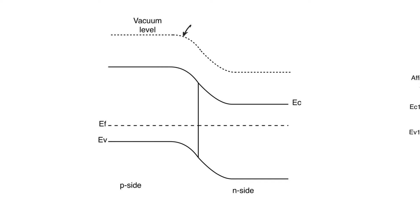Secondly, we notice that left of the interface we have an electron affinity, which is the electron affinity of silicon, and right of the interface we also have the electron affinity of silicon, because we have silicon on both sides. We also notice that the Fermi level is constant, indicating this is an equilibrium band diagram. But if we are drawing the band diagram of a device with two different materials — silicon and something else — how do we draw that? There are systematic rules we can follow.